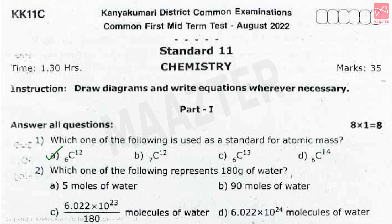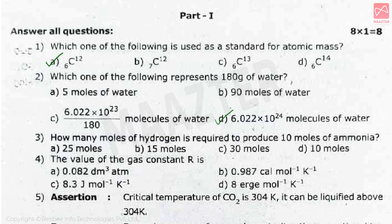The next question: which one of the following represents 180 grams of water? The correct answer is option D, 6.022 into 10 power 24 molecules of water. The molar mass of water is 18 grams. Number of moles = mass divided by molar mass = 180 divided by 18 = 10 moles. Number of molecules = 10 multiplied by Avogadro number 6.022 into 10 power 23 = 6.022 into 10 power 24 molecules of water.